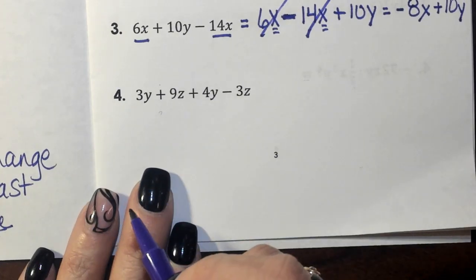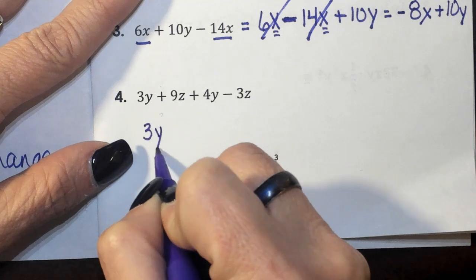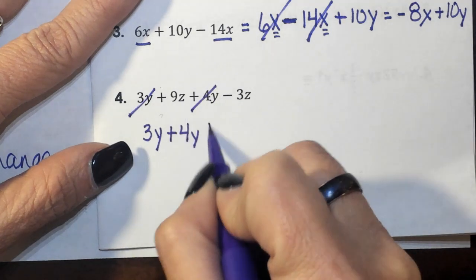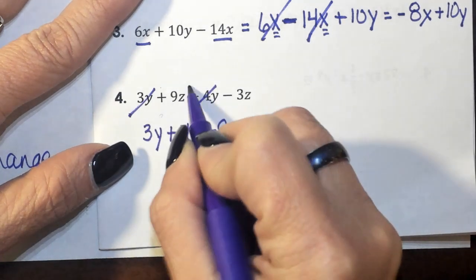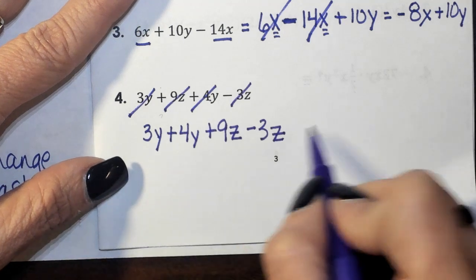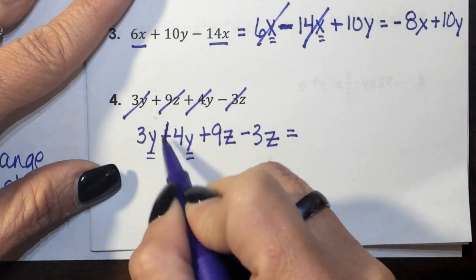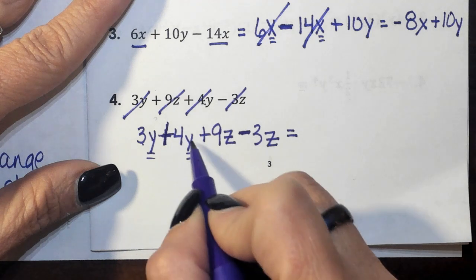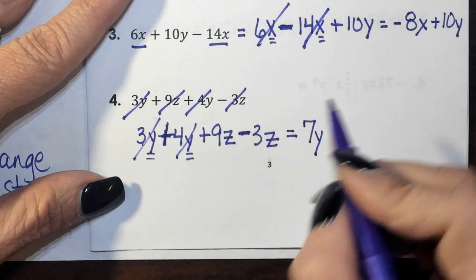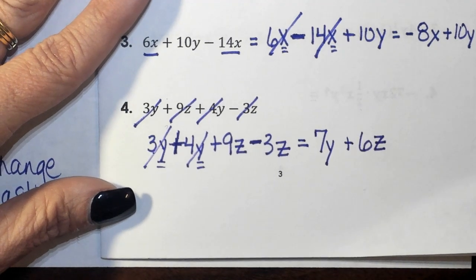Number 4 — you can rearrange it if you want. I'm going to rearrange it: 3y — mark him off — plus 4y — mark it off — 9y, plus 9z minus 3z. What does that equal? The y family goes together, separated by the walls. 3y and 4y give me 7y's — mark them off. 9 minus 3 will give me 6, and it is the z family. That's how you combine like terms.